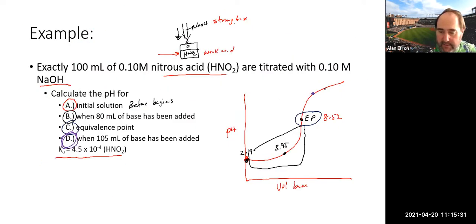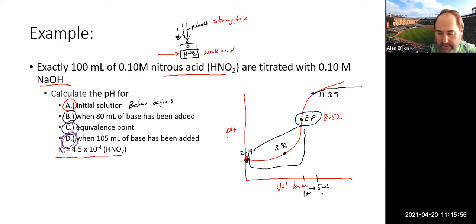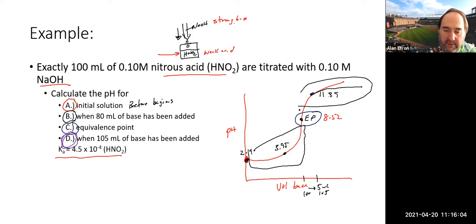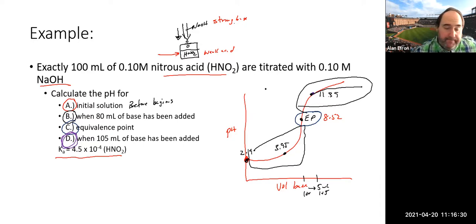Looking at the titration curve: from pH 8.52 at the equivalence point, we've jumped to pH 11.39 just 5 mL past the equivalence point — a very large jump for a small volume addition. This illustrates the steep rise past the equivalence point. For all three titration types covered — strong acid/strong base, weak acid/strong base, and strong acid/weak base — you are responsible for calculating pH at any point along the titration curve.